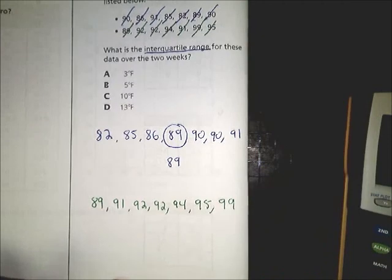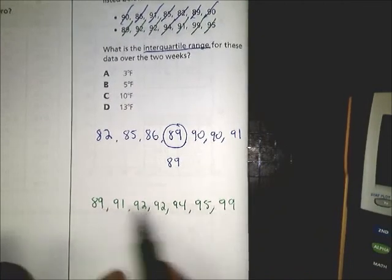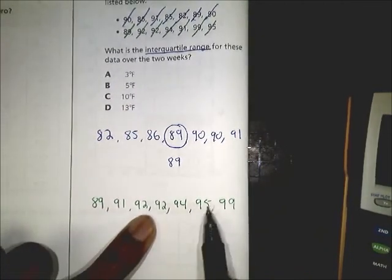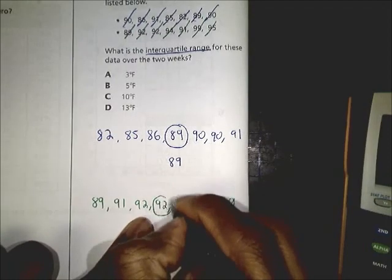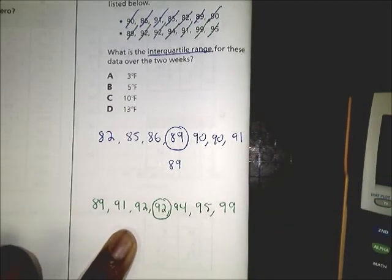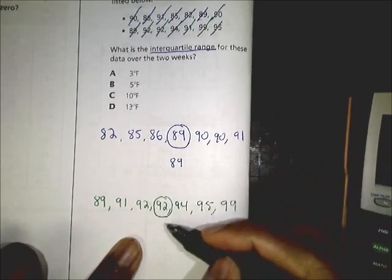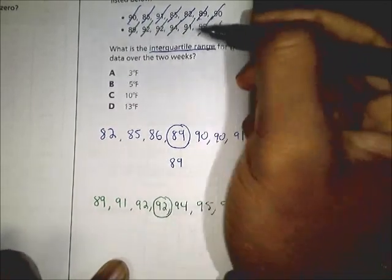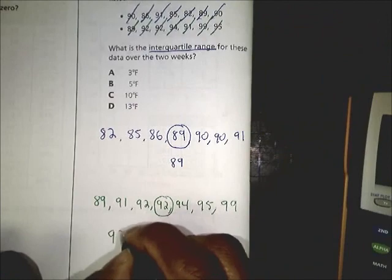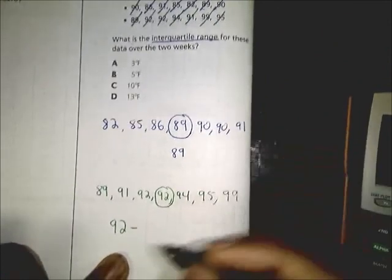So again, this is all your data and you have to find the median, the number that's in the middle. One, two, three, one, two, three. You're left with 92. And again, what I said at the beginning, your interquartile range is the median of your upper half, or the second set of data, minus the median of this lower half of data.